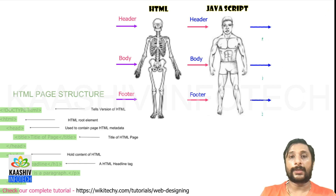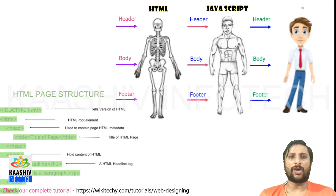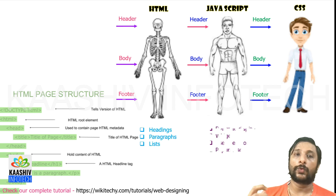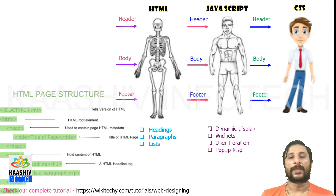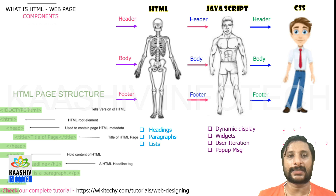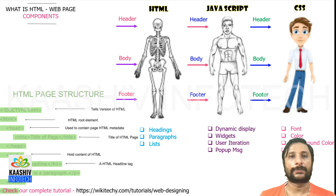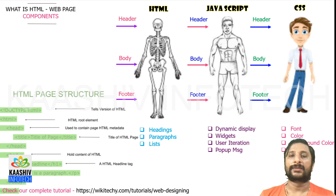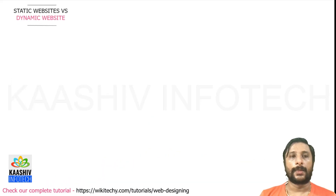HTML is the basic structure. If you want to make it stronger — with validations and security — you add JavaScript, which gives a very strong structure to HTML. For design and styling, CSS comes into the picture. So: HTML handles headings, paragraphs, and lists; JavaScript enables dynamic displays, validations, widgets, user interactions, and pop-up messages; and CSS handles font, color, background color, borders, and everything related to visual styling. These are essential to create a perfect web page.